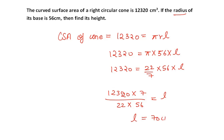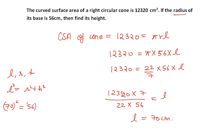Now to find the height, we use the relation between slant height l, radius r, and height h: l² = r² + h². So l is 70, giving us 70² = 56² + h². Rearranging, h² = 70² − 56².